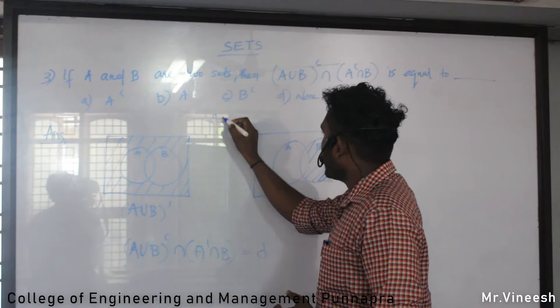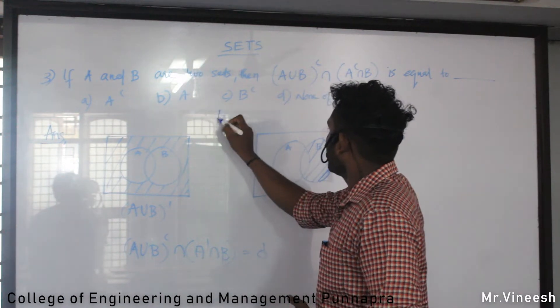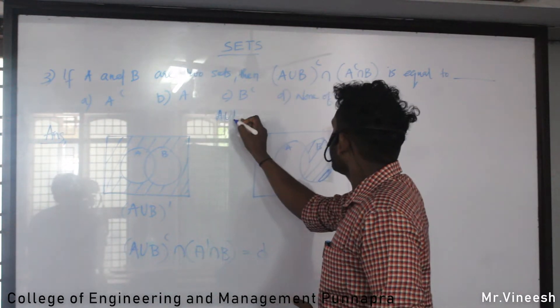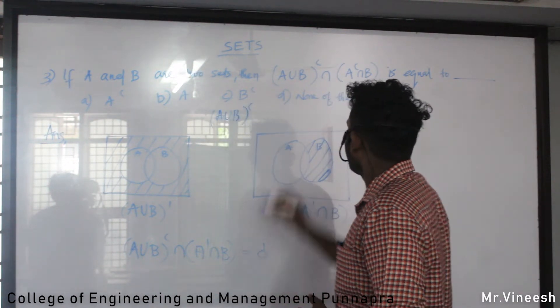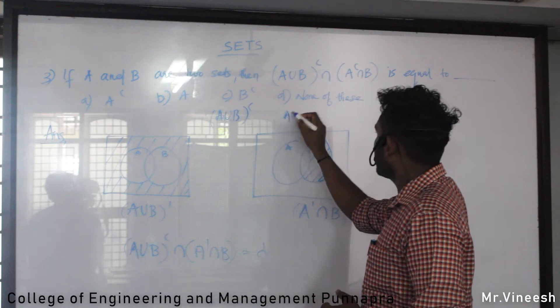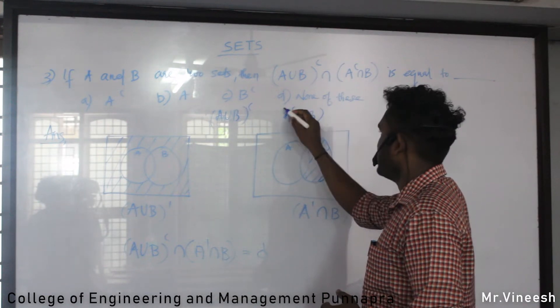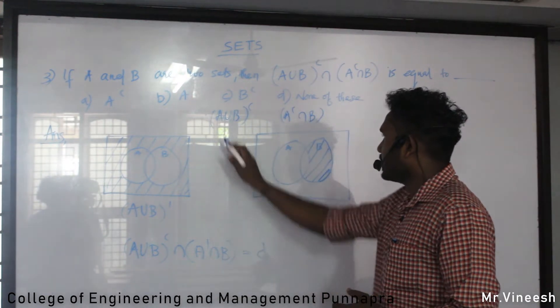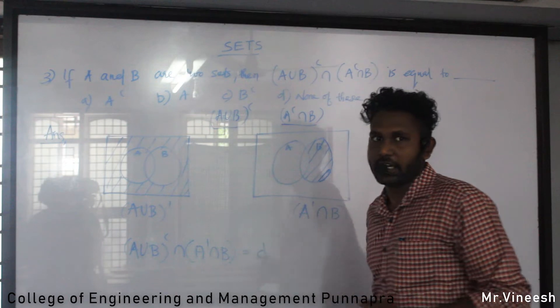The first identity is: (A∪B) whole complement, and A complement intersection B. We will apply De Morgan's law and set complement rules to evaluate this expression.